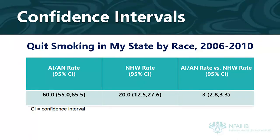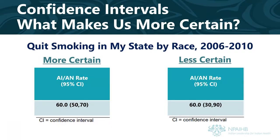You can use confidence intervals to decide how confident you are that the data represents what is true. For example, if you look at the AIAN rate of 60%, it has two numbers in parentheses to the right — that is the confidence interval. Confidence intervals allow you to say that if you pull the sample from the population 100 times, 95 out of those 100 times, the estimate or rate you see will be contained somewhere in the confidence interval. What makes us even more certain in the estimate is if the confidence interval is smaller — so a range of 50 to 70 is generally better than a range of 30 through 90, because there's less room for error. That said, there are cases where a rate gives you valuable insight even if the confidence interval is large.